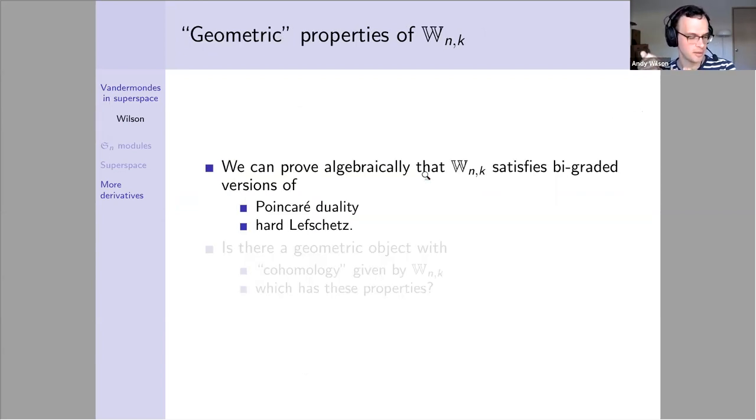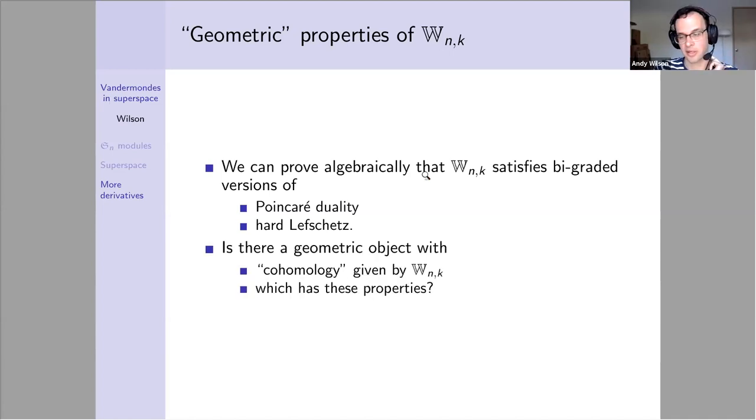I'm going to finish by mentioning a couple geometric properties of this W_{n,k} module, bigraded by the x and theta variables. Some we've proved, some are still conjectural. Our proofs are all algebraic and we'd like them to be the shadow of some geometric object. We have some type of Poincaré duality and some type of hard Lefschetz, but we don't know what the geometric object is. We can just prove by hand it has some version of this. The main open question in my opinion is: are we looking at the cohomology of some nice geometric object, or are we just lucky?